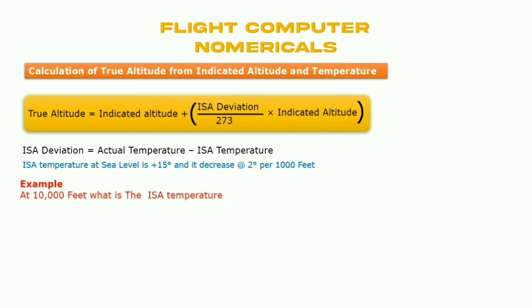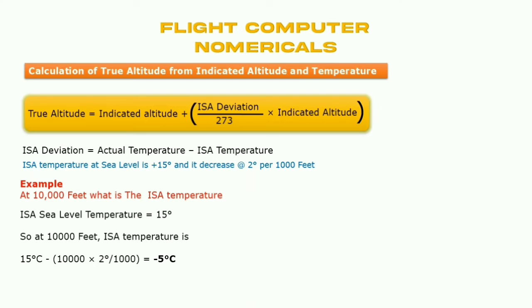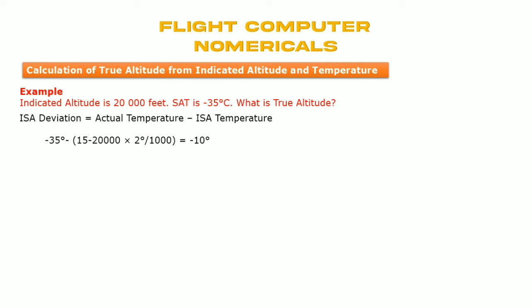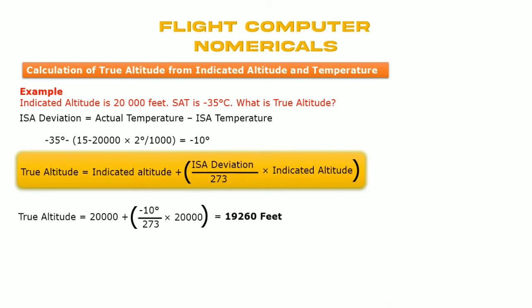For example, climbing from sea level to 1,000 feet, ISA temperature is plus 13 degrees Celsius. At 10,000 feet ISA temperature is minus 5 degrees Celsius. Example: indicated altitude 20,000 feet, static air temperature (OAT) is minus 35 degrees Celsius — what is true altitude? ISA deviation = actual temperature minus ISA temperature = minus 10 degrees. Putting the values into the true altitude formula gives 19,260 feet.